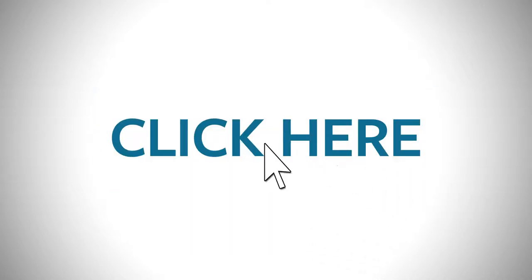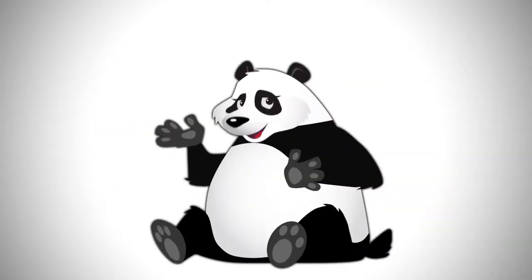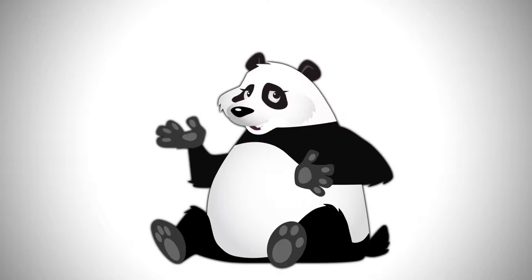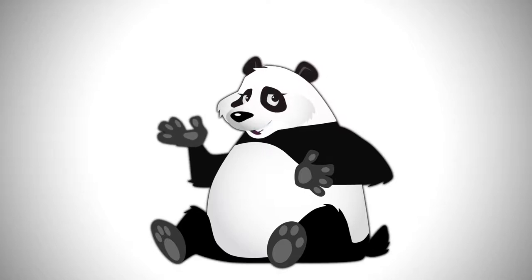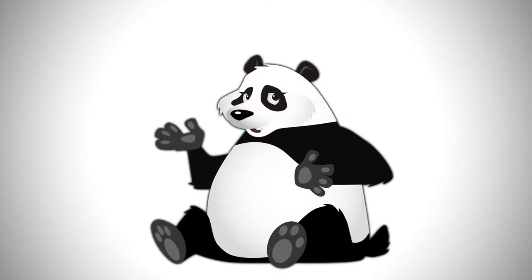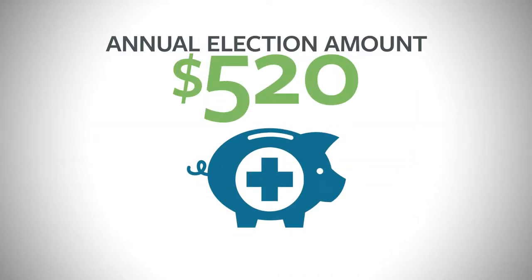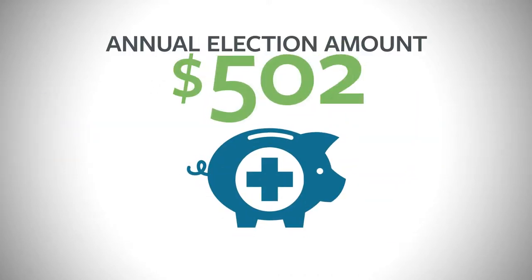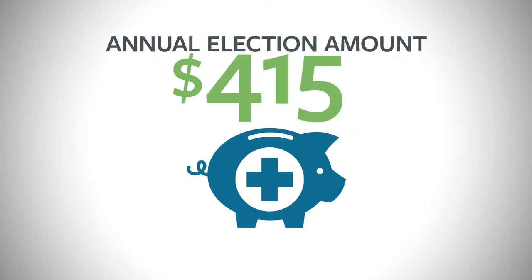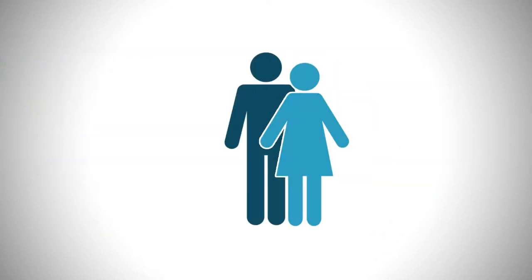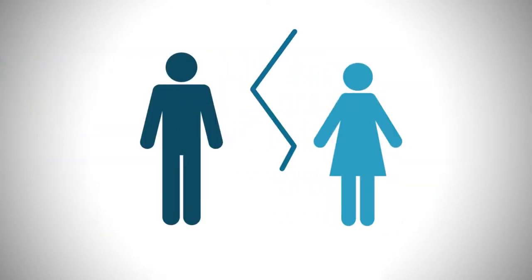As we all know, whenever there is a government-sponsored program — which is what a flexible spending account is — there are rules we have to follow. Rule number one: once enrolled in the plan, you can only change your annual election amount if you experience a qualifying event, including marriage, divorce, or the birth of a child.